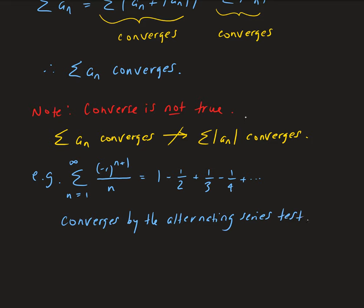Remember, there are two conditions for the alternating series test: the first condition is that the nth term has to go to 0, and the (n+1)th term has to be less than or equal to the nth term. I'll let you verify those conditions.